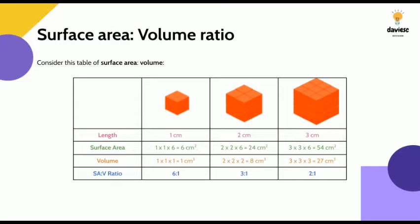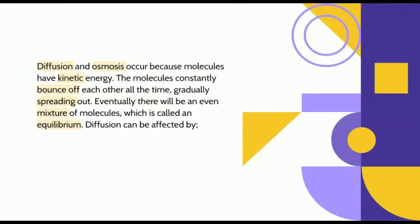Now we'll look at why that is. Diffusion and osmosis occur because molecules have kinetic energy — the energy to move around. These molecules bounce off each other and spread out in a gas. When there's a mixture of them we call this equilibrium, and this is something we need to know as a theory as we look at how diffusion can be affected.